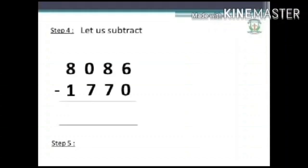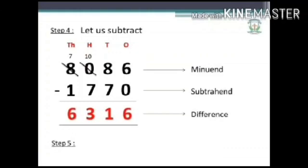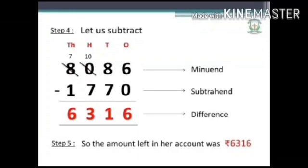Step 4: Let us subtract. 8086 is called the minuend, 1770 is called the subtrahend, and the difference is 6316. So the amount left in her account was rupees 6316.